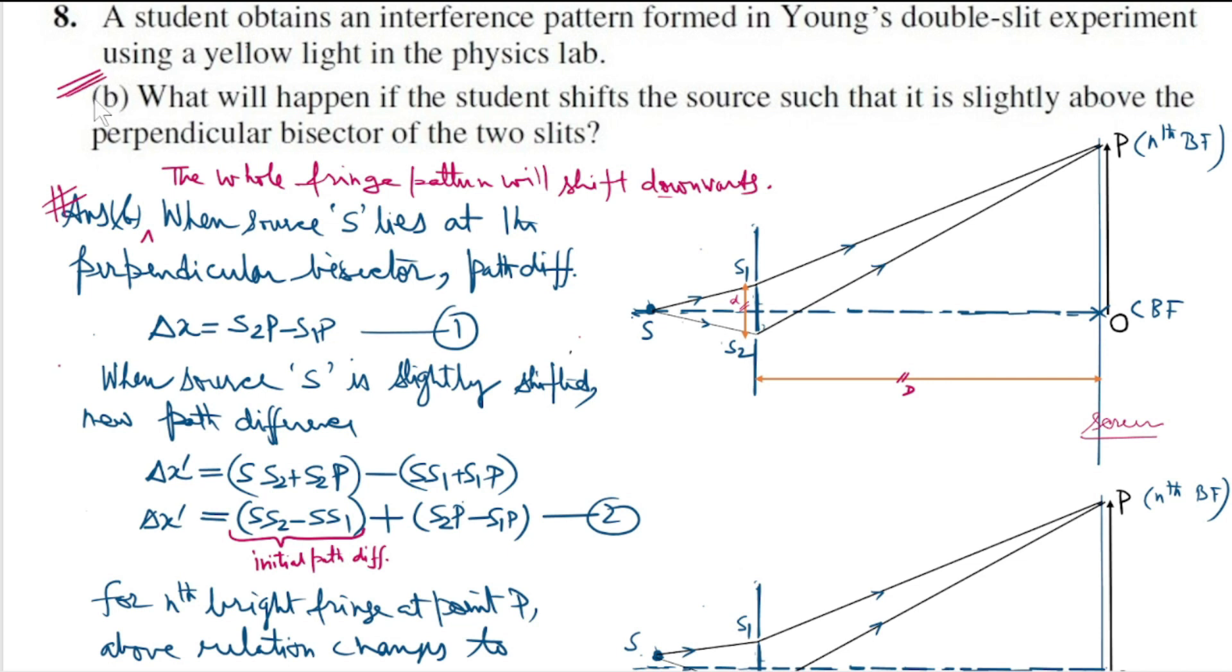In part B of the problem, a student has obtained an interference pattern using yellow light, and the source of light is placed on the perpendicular bisector of the sources S1 and S2. The question is what will happen if this source S is shifted slightly upwards? The answer is that when the source S is slightly shifted upwards, the whole fringe pattern will shift downwards.